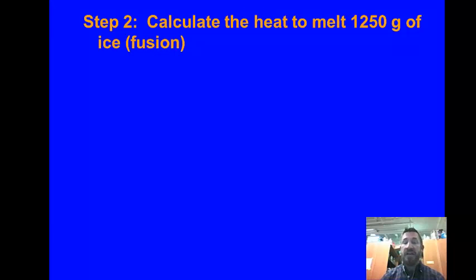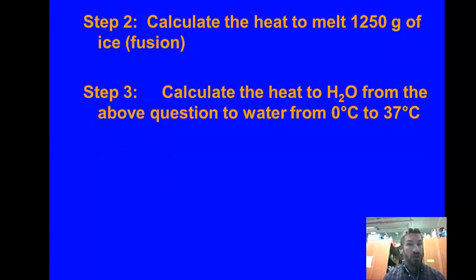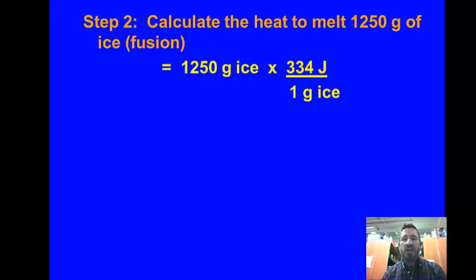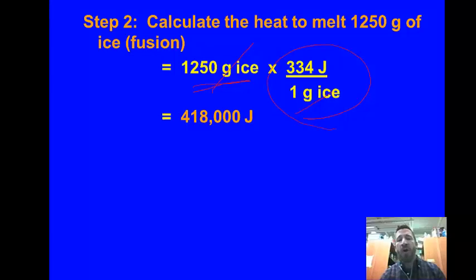We're going to do two calculations. First, calculate the heat it takes to melt 1,250 grams of ice — remember, melt is another word for fusion. For this calculation, you take your mass and multiply it by the heat of fusion of water. Every substance has a different heat of fusion, and you'll be given those in a table. Your grams cancel and you're left with your answer in joules. The answer is 418,000 joules. That's the flat portion of the curve — the potential energy portion.